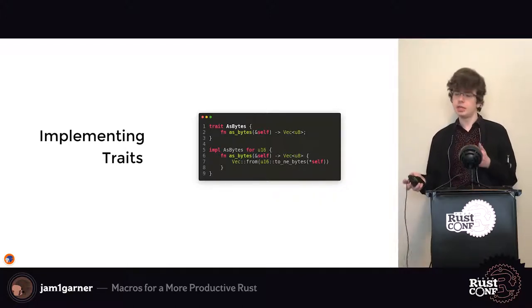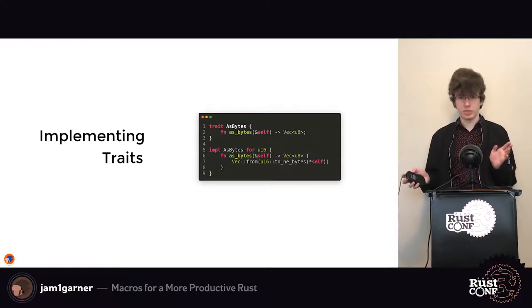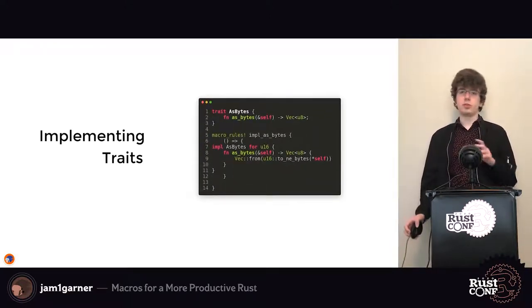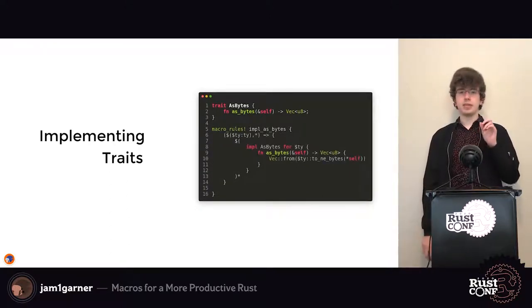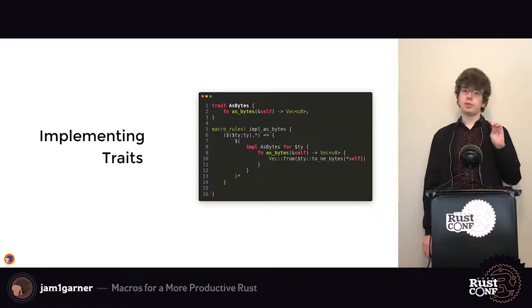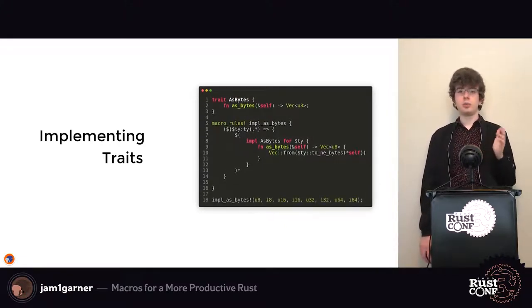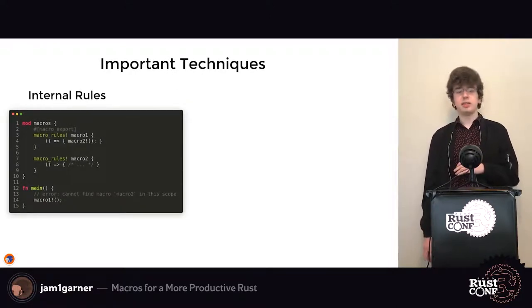It's going to be a lot to read, and any time you make a change you'll have to change all of them. But we can remove that repetition by using repetition to implement the trait for all integer types at once. We wrap our example implementation in a macro, set it to repeat, make the pattern match against repeated comma-separated type names, and replace every instance of u16 with our type name. Calling it with all the types generates implementations for all of them, and we only maintain one templated implementation.